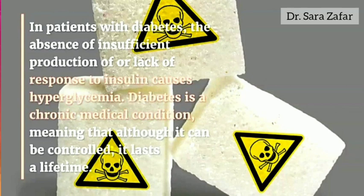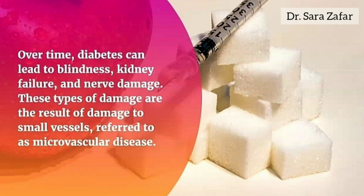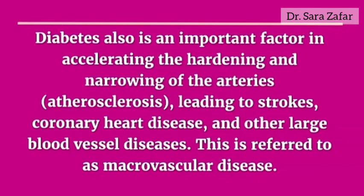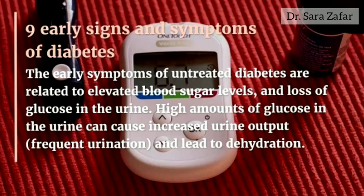Diabetes is a chronic medical condition. Although it can be controlled, it lasts a lifetime. Over time, diabetes can lead to blindness, kidney failure, and nerve damage. These types of damage are the result of damage to small vessels, referred to as microvascular diseases. Diabetes is also an important factor in accelerating the hardening and narrowing of the arteries — known as atherosclerosis — leading to strokes, coronary heart disease, and other large blood vessel diseases, referred to as macrovascular diseases.